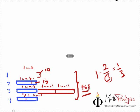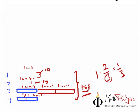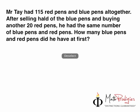Okay, I'm going to delete everything. And now I'm going to show you the next question. The next question is, for today: Mr. Tay had 115 red pens and blue pens altogether. After selling half of the blue pens and buying another 20 red pens, he had the same number of blue pens and red pens. How many blue pens and red pens did he have at first? Very easy. Remember, this is very easy. Pause the video, take down the question, and do the answer. Do the solution.